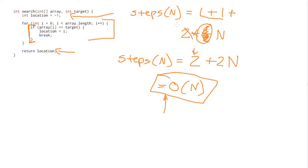As you get more experienced with algorithm analysis, you'll be able to look at a method like this and quickly say: these things are constants I can ignore, but I need to look at the loop. Loops should dominate your attention. This loop goes on average halfway through the array with constant work inside, so you can quickly decide it's big O of n. That's the shortcut approach you'll be able to use once you have more experience.